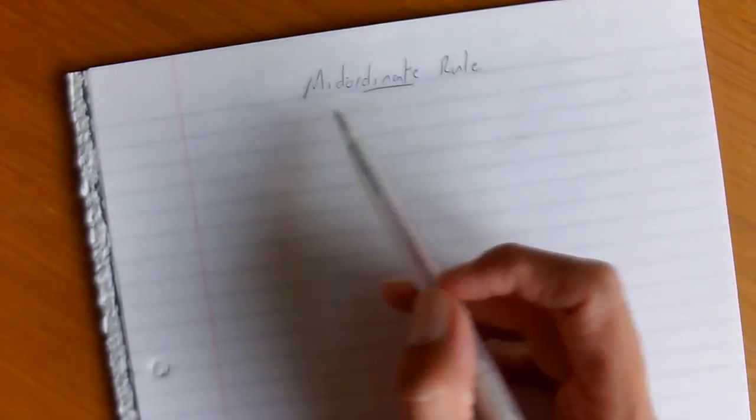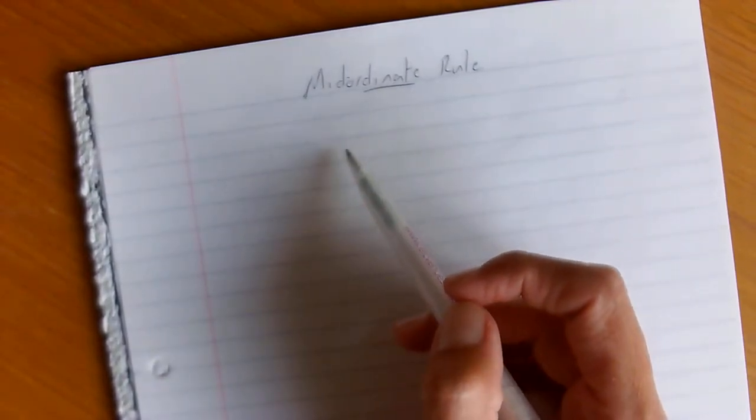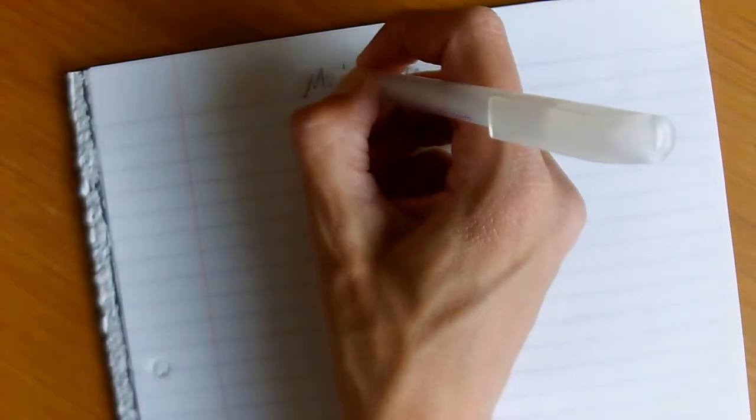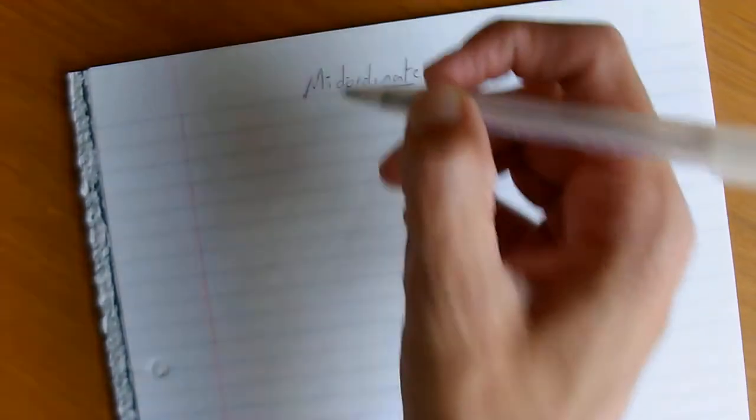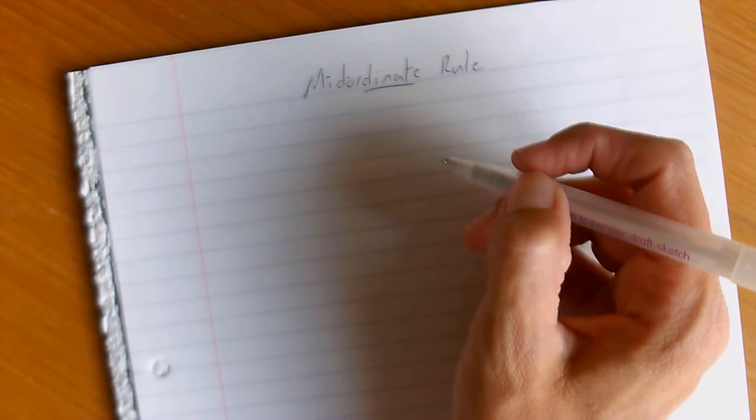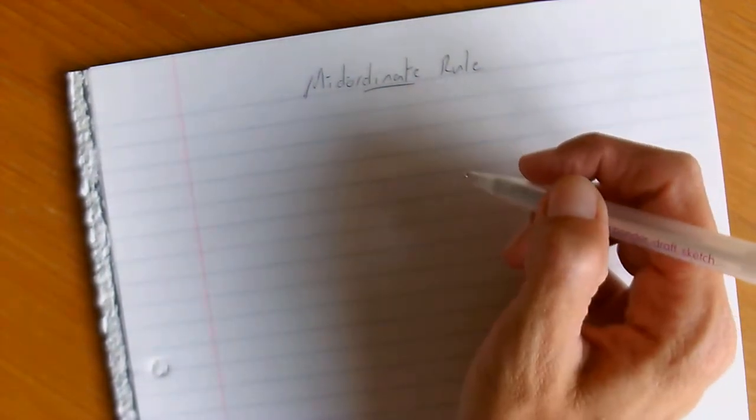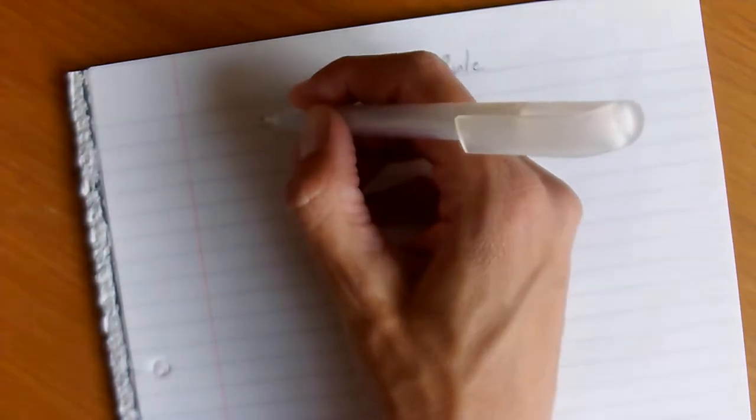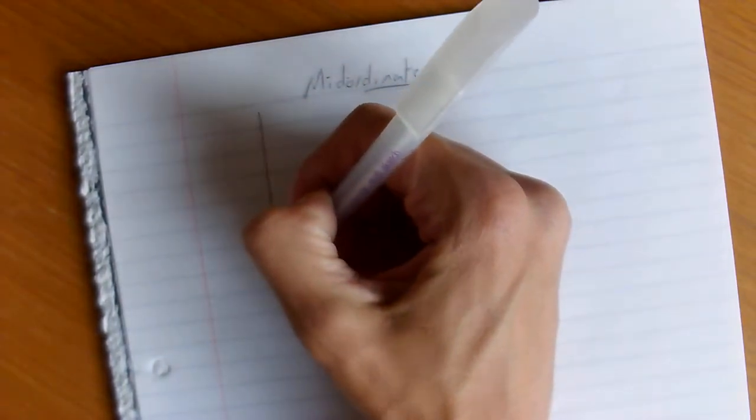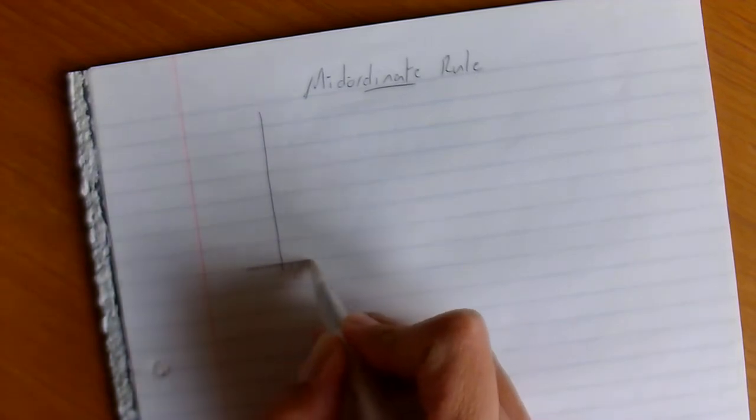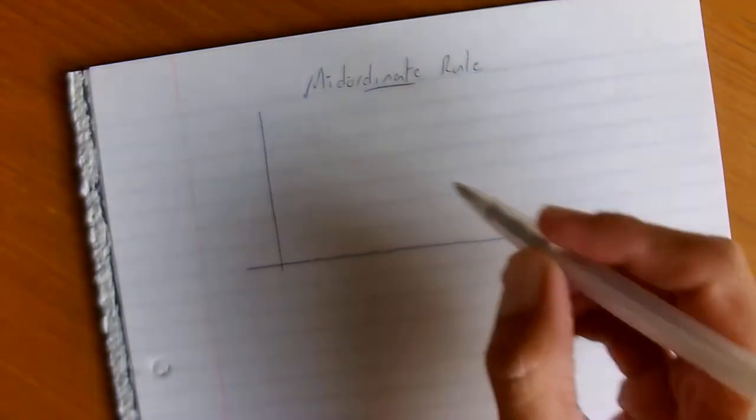But the mid-ordinate rule is okay. And Simpson's rule is actually more accurate. We will do that as well in these little videos that I'm chatting with you through. So anyway, let's talk about mid-ordinate rule. And again, it is an estimation for the area under a curve.